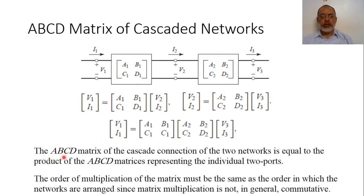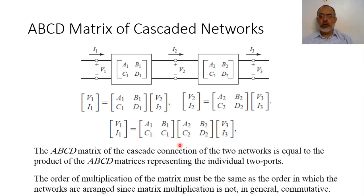The ABCD matrix of a cascaded connection of two networks equals the product of the individual ABCD matrices. It should be noted that this product must be performed in the same sequence as the arrangement of the networks — for example, multiplying the ABCD matrix of the input matching network by the ABCD matrix of the amplifier. The order of multiplication must match the order in which the networks are arranged, since matrix multiplication is not in general commutative — that is, A·B does not equal B·A for matrices.